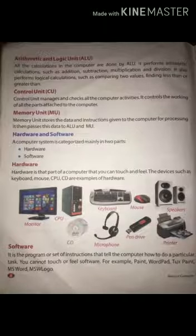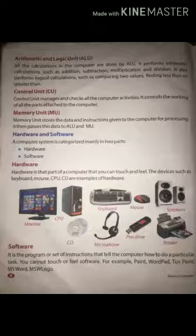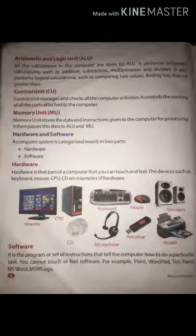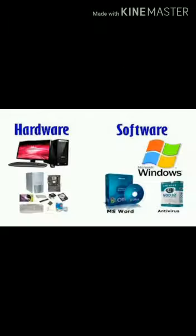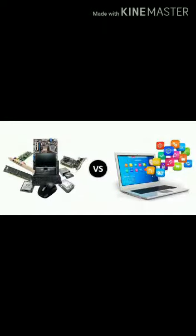Now here we will discuss about the components of the computer. It is divided in two parts: hardware and software. The first part is hardware. The parts of the computer that you can touch and feel, or we can say the physical parts of the computer, are called hardware. For example, keyboard, monitor, mouse, pen drive, etc. The second part is software. This is a collection of programs or instructions that perform some tasks on the computer, or it is the set of programs which helps the computer to function properly. For example, MS Paint, MS Word, WordPad, etc.